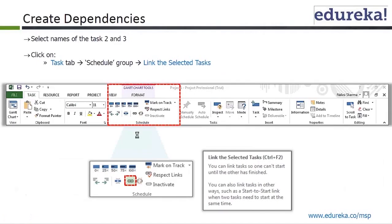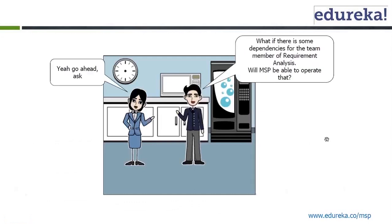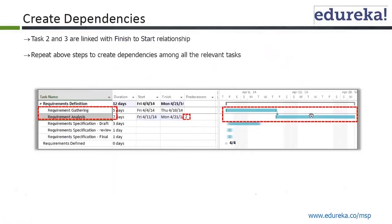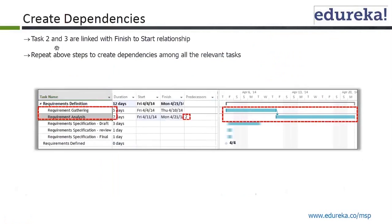Once you have linked the task, there is an important question: what if there are some dependencies for the team member of requirement analysis — will MSP be able to operate that? Essentially, that's how we create those dependencies, as we have already seen. Task 2 and 3 are linked with a finish-to-start relationship. Repeat the above steps to create dependency among all the relevant tasks.